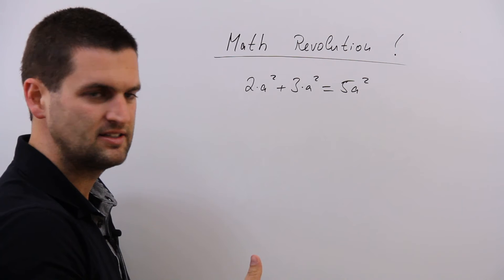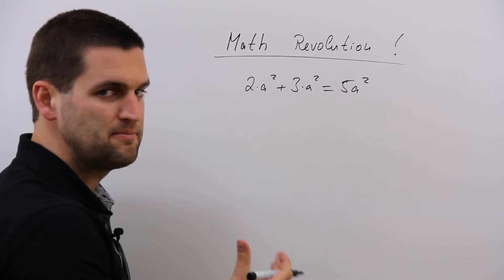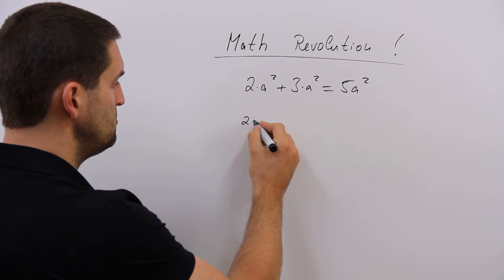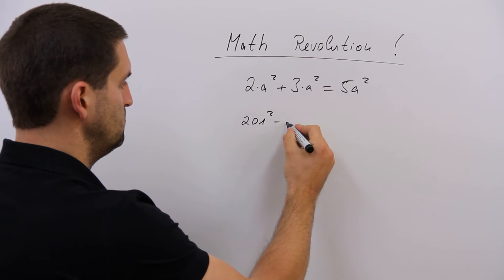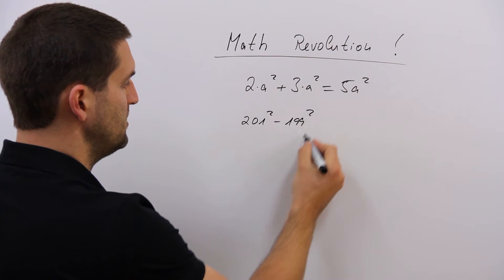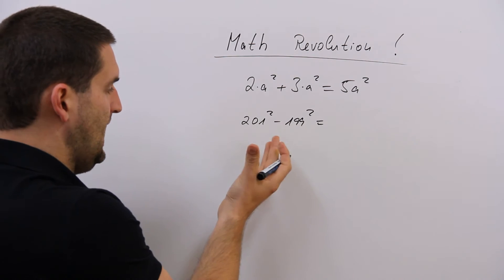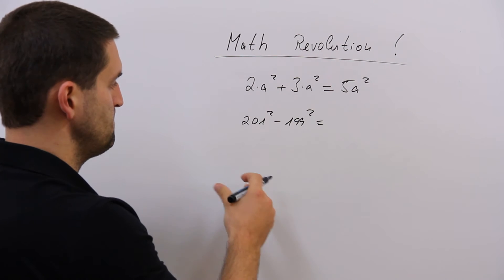That's very important for your life. Another example: 201 to the power 2 minus 199 to the power 2. Most people say I can't do this, never ever in my life.